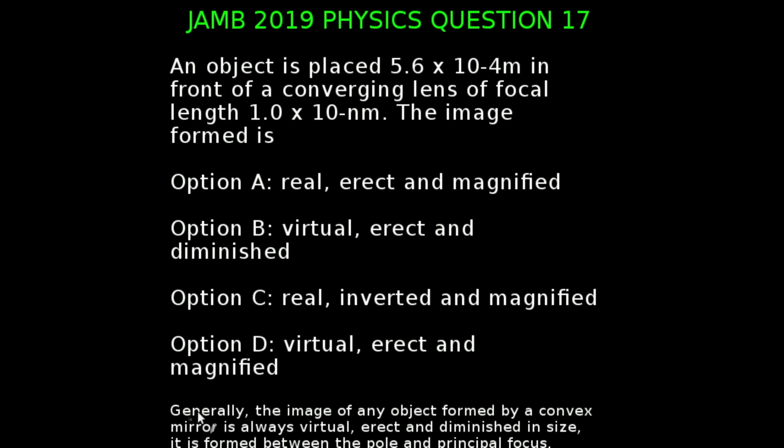First of all, let us look at this. We generally know that the image of any object formed by a convex mirror is always virtual, erect, and diminished in size. And it is formed between the pole and the principal focus.